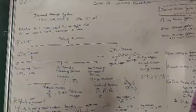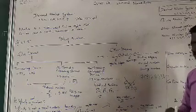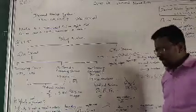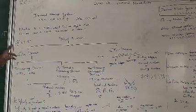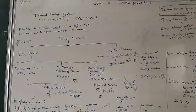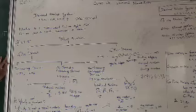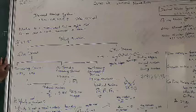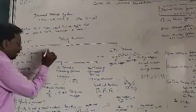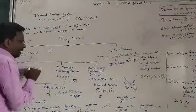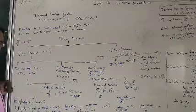Is 0 a rational number? Yes, we can write 0 as a rational number by putting 1 in the denominator. 0 can be written as 0 by 1, which is a rational number.